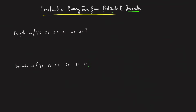How do you solve this? It's easy. Postorder is left, right, root. Inorder is left, root, right. So the last element of the postorder is the root of the entire tree. Once you have the root, you find it in the inorder — everything to its left belongs to the left subtree, and everything to its right belongs to the right subtree.